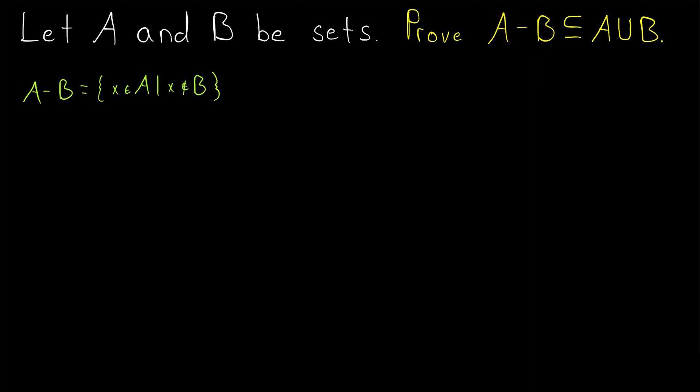Speaking of what it means, here is the definition. A minus B, or the relative complement of B with respect to A, is just the set consisting of all elements of A that are not elements of B. So the elements of B have been subtracted from the set, and that's what gives us A minus B.